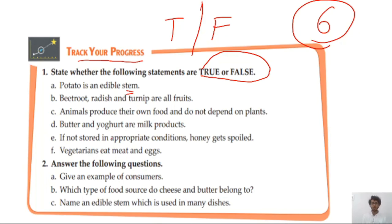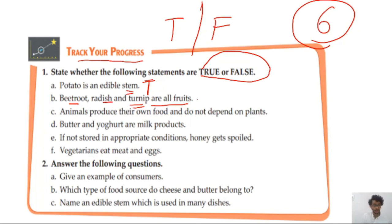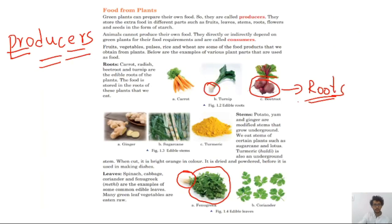Second: beetroot, radish, and turnip — are all fruits. Do you think they are fruits? No, they are not fruits — it is false. Beetroot, radish, and turnip are roots, not fruits. Fruits are mango, papaya, and oranges. For the remaining questions three, four, five, and six — write them down in your homework book.